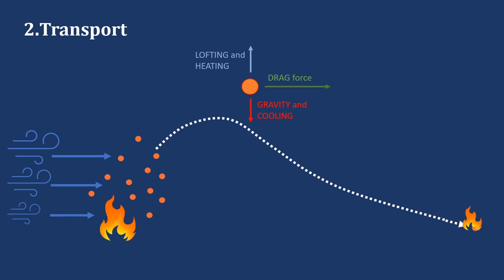If the ember ignites the fuel it lands on, it has successfully spread the fire. This process is called spotting and allows wildfires to jump over fire breaks and enter structures through small holes. Remember that wildfires produce many embers which can ignite numerous spot fires simultaneously.